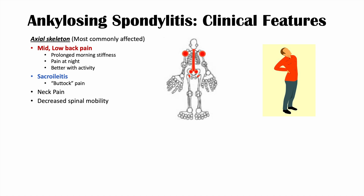Because of prolonged inflammation and bone fusion, patients begin to show decreased spinal mobility and difficulty bending and flexing the spine. Although the axial spine is most commonly affected, the lower extremities can also be involved. The most common peripheral joints affected are ankles, hips, and knees. We can also see enthesitis — inflammation where the tendon inserts into bone — typically presenting as heel pain at the Achilles tendon insertion into the calcaneus. Dactylitis, or toe inflammation, can also occur.